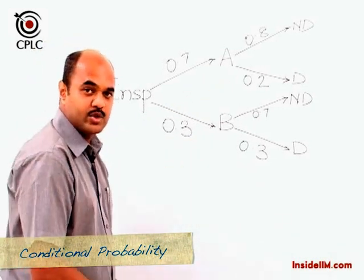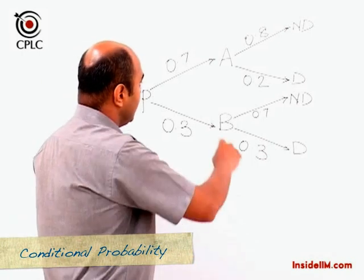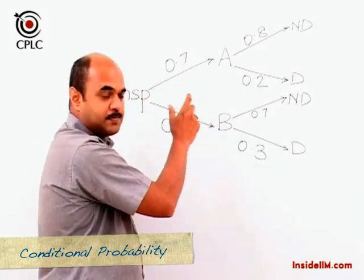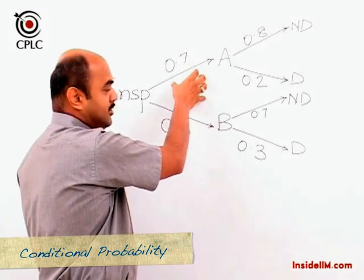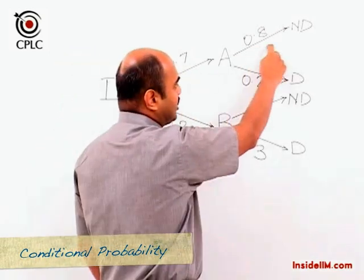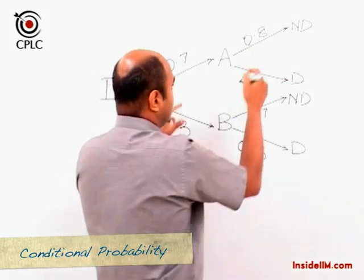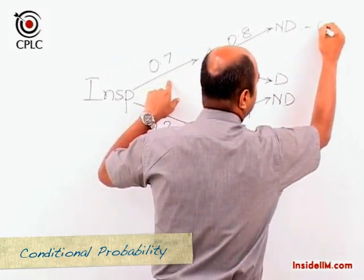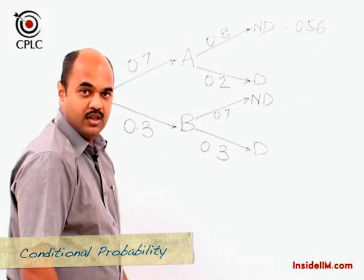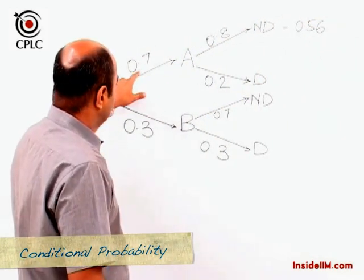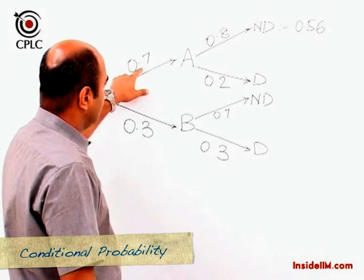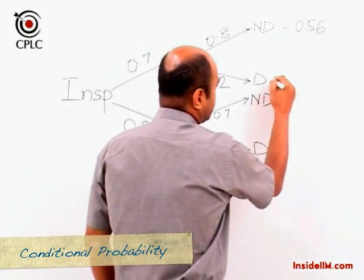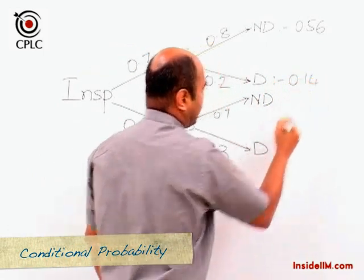Let's figure out how to solve this. If the article is picked up from machine A — which has probability 0.7 — and it is non-defective, then this gives us 0.7 × 0.8 = 0.56. Further, if the article is picked up from machine A and it is defective, this works out to 0.14.